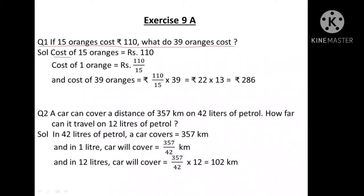The cost of 15 oranges is already given, that is rupees 110. Now, the cost of 1 orange — we will simply divide 110 by 15. After that, we have to find the cost of 39 oranges. So cost of 39 oranges equals 110 divided by 15, multiplied by 39.